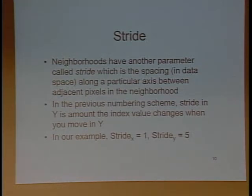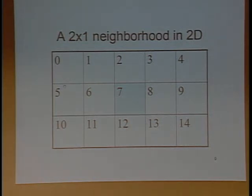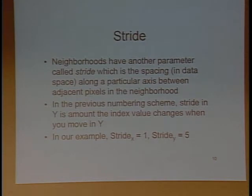Another important parameter about a neighborhood is stride, which is the difference of the neighborhood positions along a particular dimension. For example, in this case the stride in X direction is 1, because the difference between the position of two adjacent pixels is 1. And the stride in Y direction is 5. So if you think of this neighborhood as a 2 by 1 by 0 neighborhood in 3D, then the stride in Z direction would be 15. You can easily convert stride to size and vice versa.